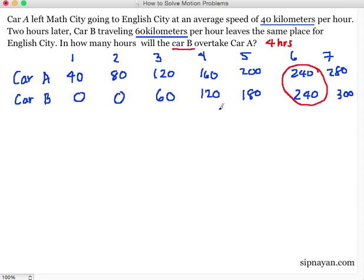So 6 hours siya pag sa point of view ng Car A. Pero yung tanong natin, how many hours will Car B overtake Car A? So nandun siya sa point of view ng Car B.